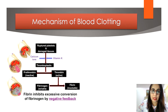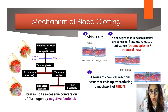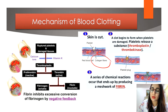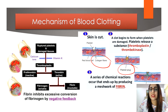Now let's look at the mechanism of blood clotting. If blood vessels are wounded, the collagen fibers in the wall of the vessel will be exposed to the blood. Platelets will be activated and become sticky, sticking onto the exposed collagen fibers to form coagulated platelets — also called a plug.